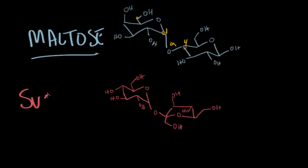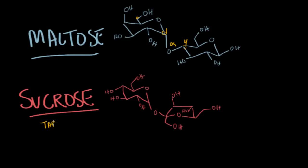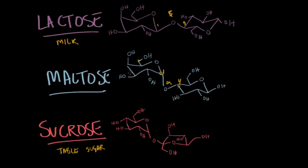Last but not least is sucrose, which is actually probably the most common disaccharide in all of nature. Sucrose is the principal disaccharide of table sugar, which comes from sugar cane, and it's quite sweet. It differs substantially from maltose and lactose: while those have two pyranoses — six-membered carbohydrate rings — bound together by the glycoside, sucrose is different.